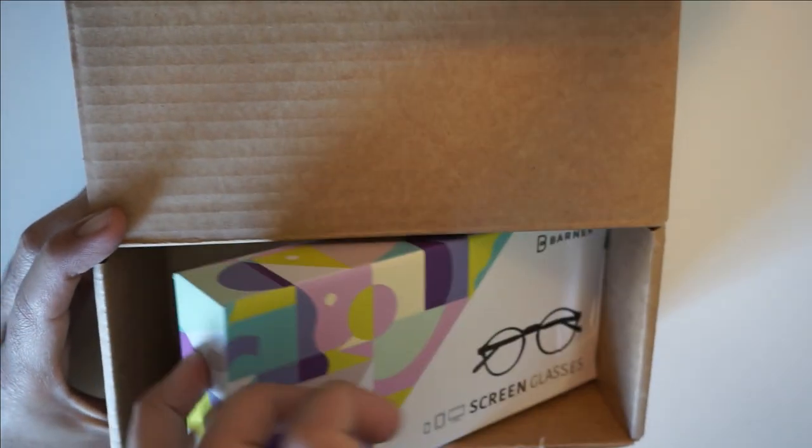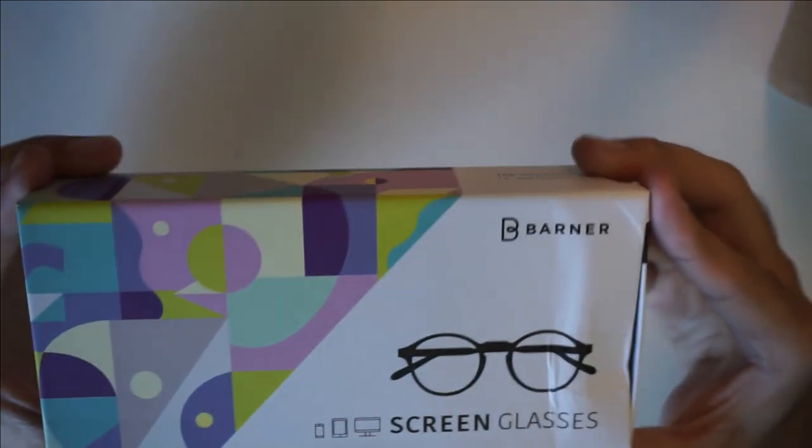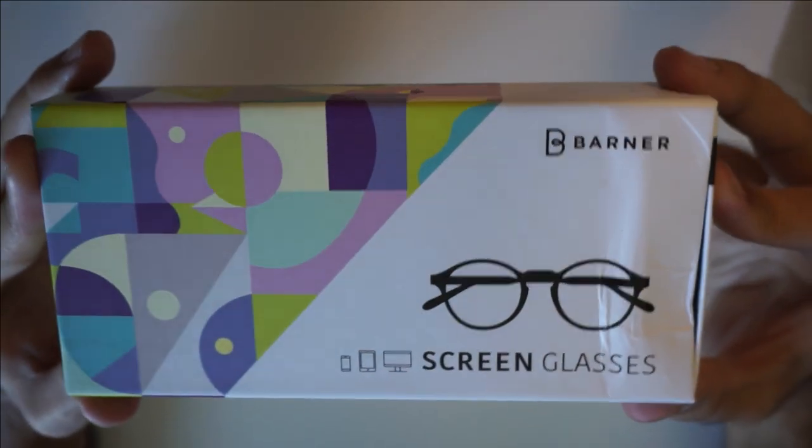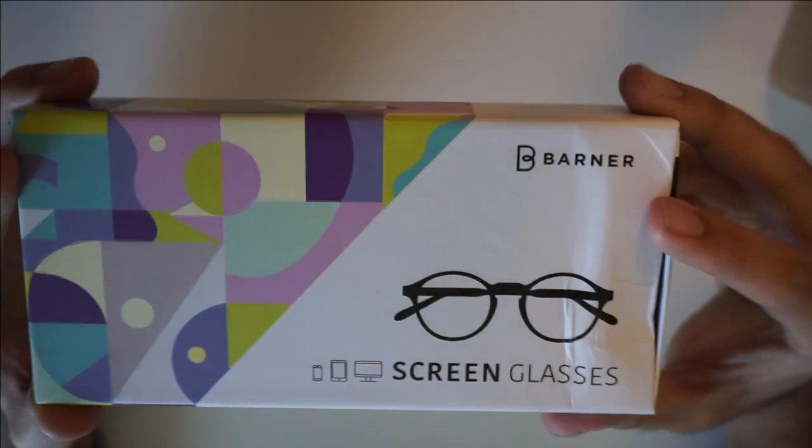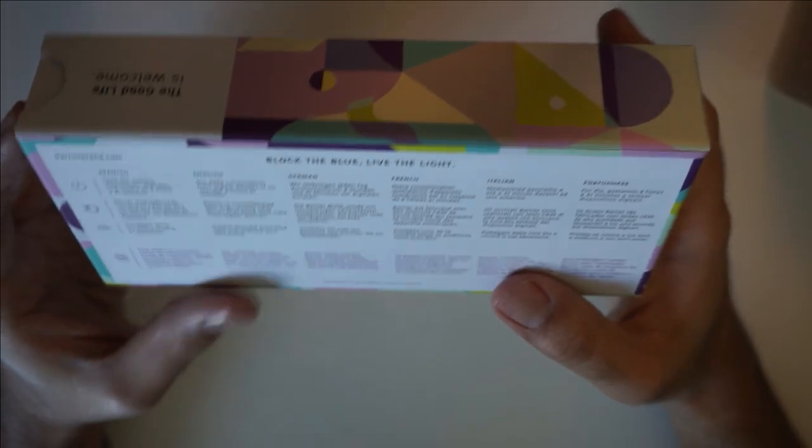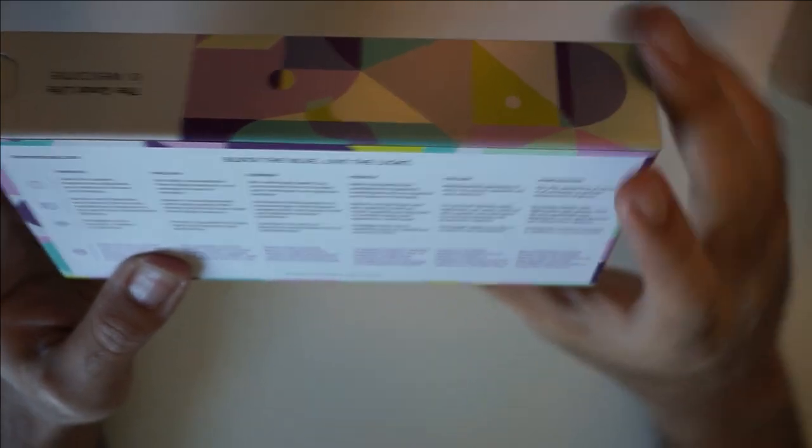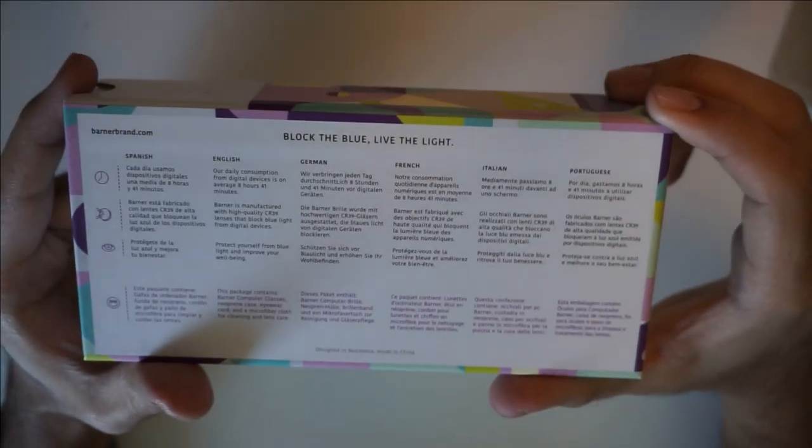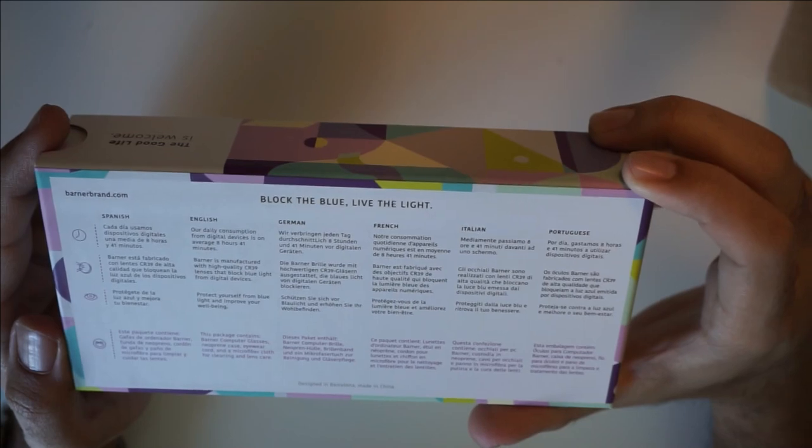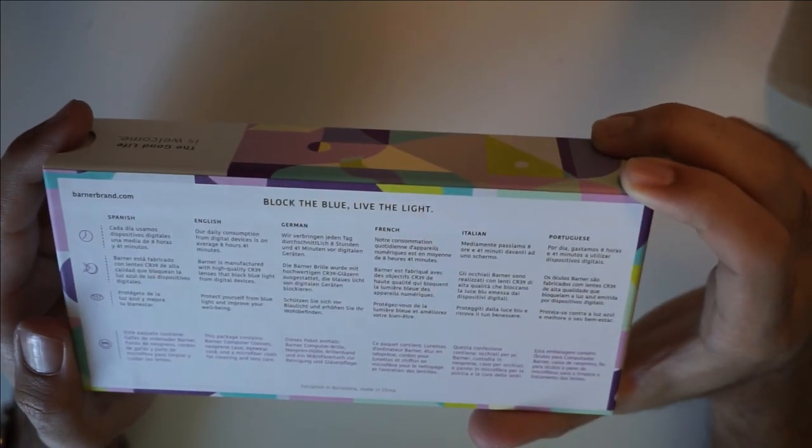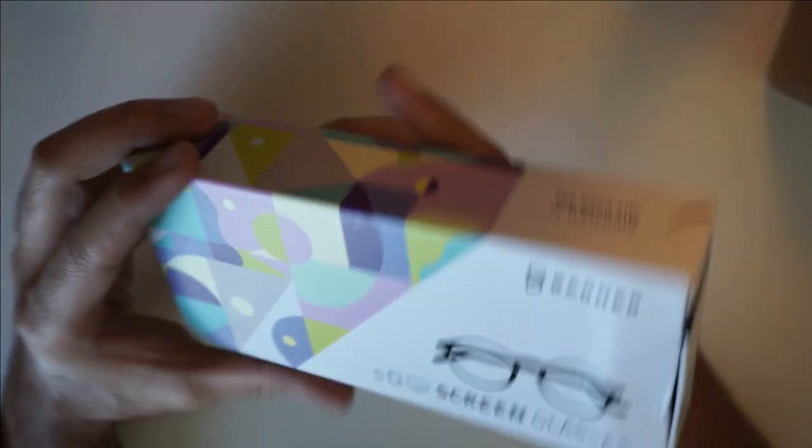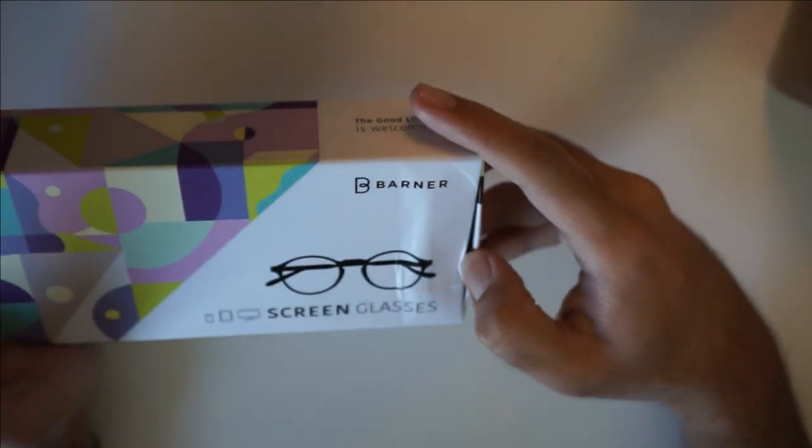So this is how this looks. It says screen glasses, we have the Barner logo on the box and you have some information behind the scenes. So block the blue, live the light. This is supposed to block a lot of blue light when you're watching a screen for quite a long and I think this is something that I really required because of spending a lot of time with my computer and I was also having some headaches.